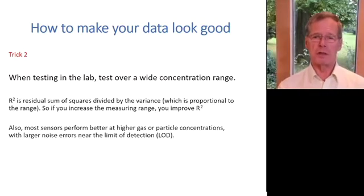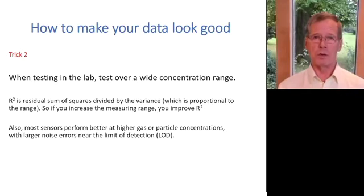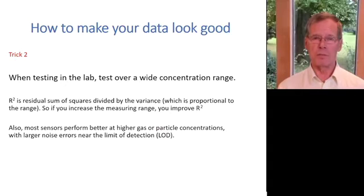The next important trick: if you're going to measure data, measure it over a wide range of concentrations. This allows you — in the way that R-squared is calculated, because of the effect that you divide by the variance — to give you better R-squared. So if you're measuring a lot of low concentrations, make sure that you also measure some high concentrations so that you have an R-squared plot extended beyond the low range. This alone will improve your R-squared.